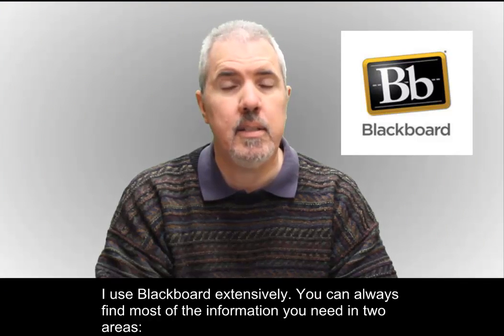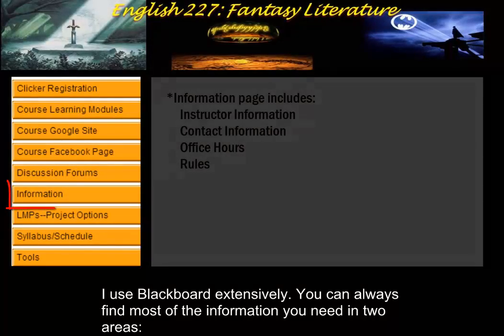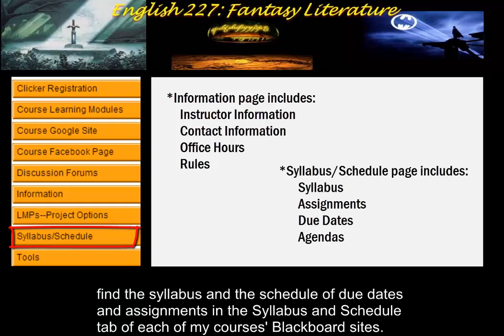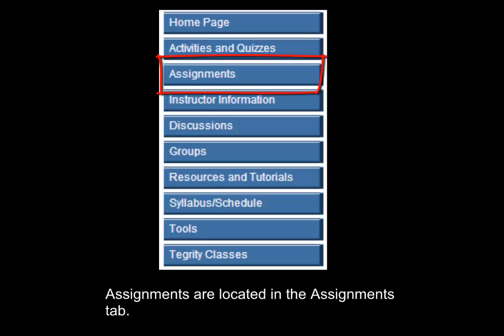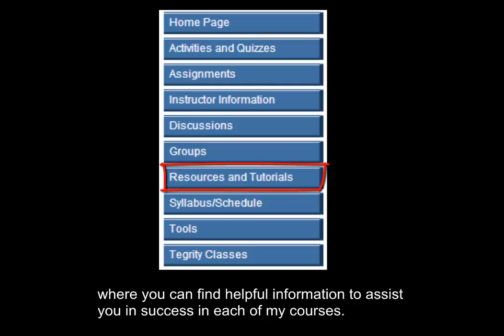I use Blackboard extensively. You can always find most of the information you need in two areas. The first is the information page — that's the home page for each of my course's Blackboard sites. You can also find the syllabus and the schedule of due dates and assignments in the syllabus and schedule tab of each of my course's Blackboard sites. Assignments are located in the Assignments tab — all of the major assignments for each of my courses are located in this tab. I also always include a Resources tab where you can find helpful information to assist you in success in each of my courses.